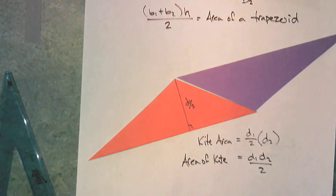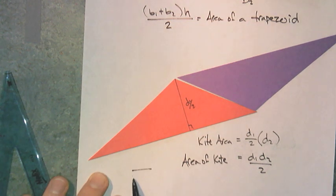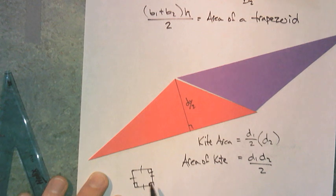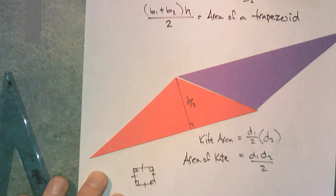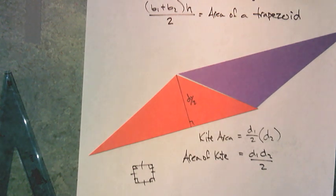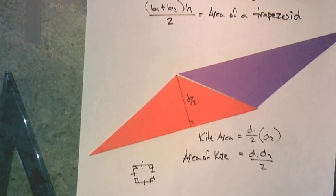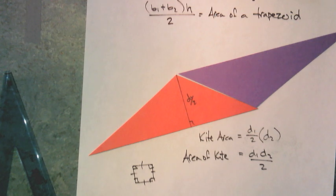Interestingly, squares can use this same diagonal formula — the diagonals multiplied together divided by two — to find the area of a square as well.